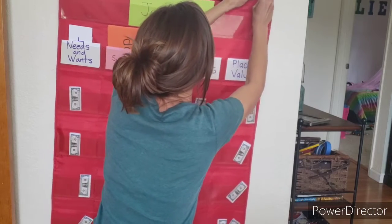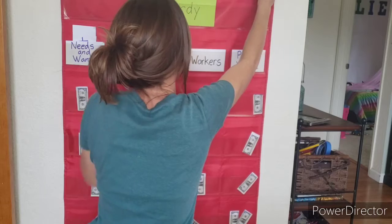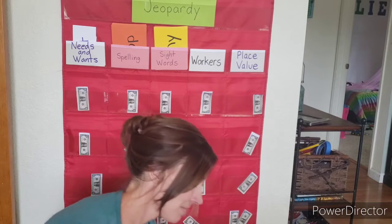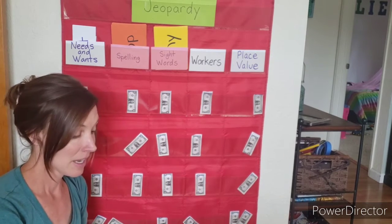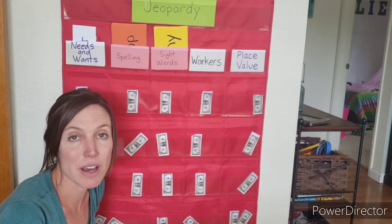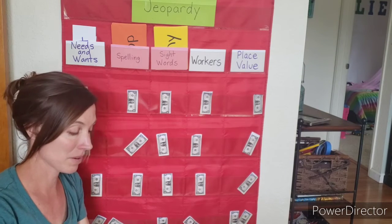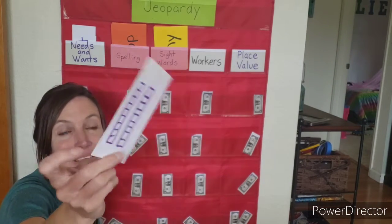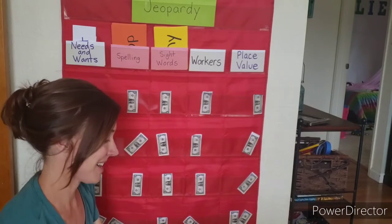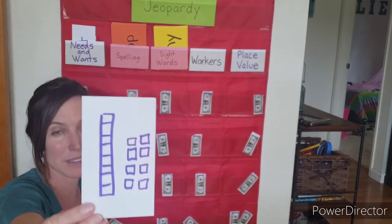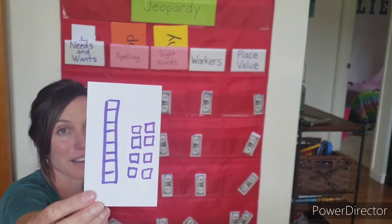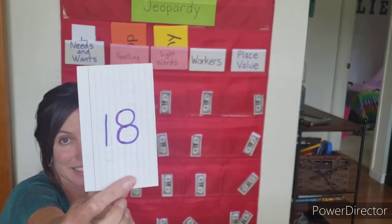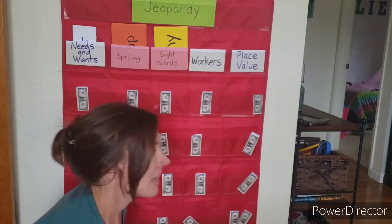Let me put my Jeopardy board back up here. Are we ready? Let's start with Place Value. I'm going to show you some tens and ones and I want you to write down the number at home, or think of the number in your head. Start with this one — it's two tens. What is that? Did you write down 20? The next one has one ten and eight ones — go ahead, take a minute to write it down. Did you get 18?